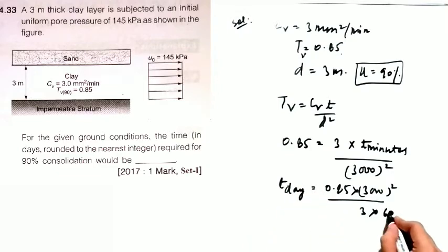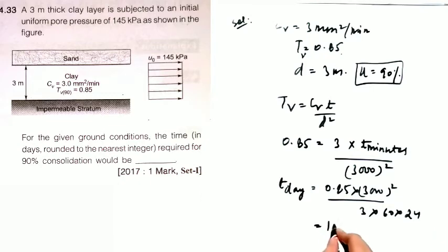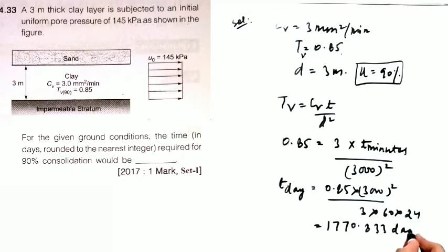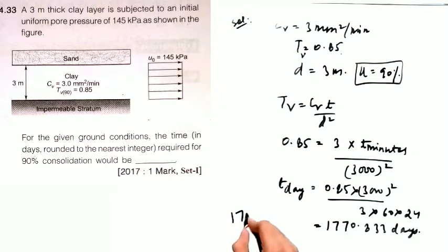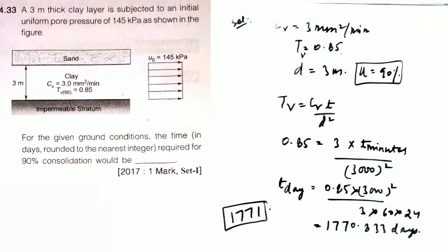Converting t from minutes to days by dividing by 60 and 24, it comes out to be 1770.833 days. Rounded to the nearest integer — since 0.833 rounds up — the answer is 1771 days. This is the required number of days for 90% consolidation to complete.